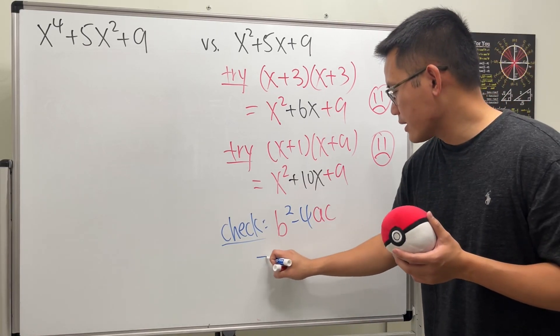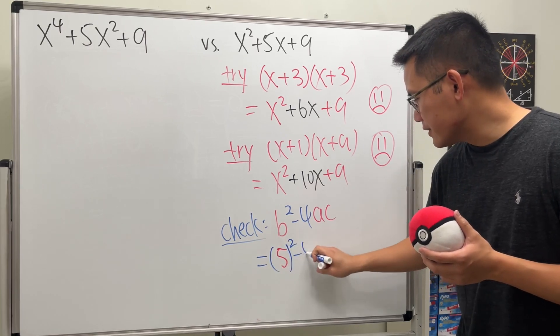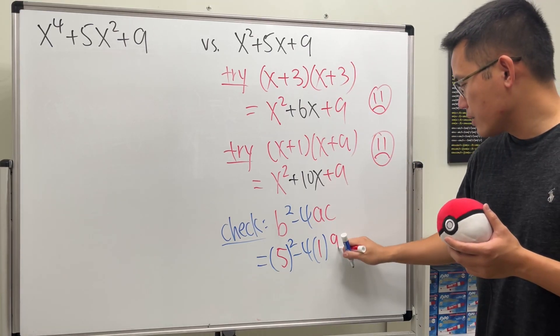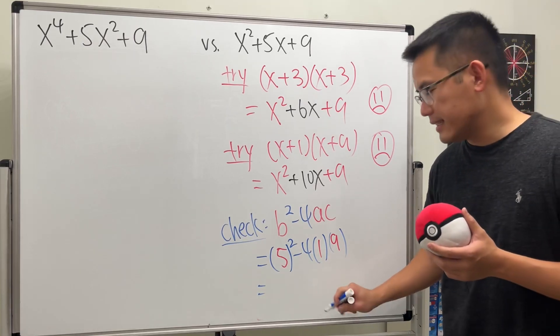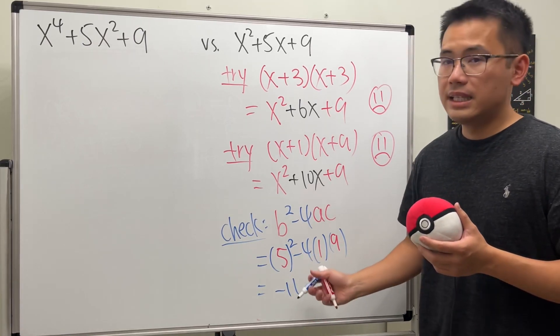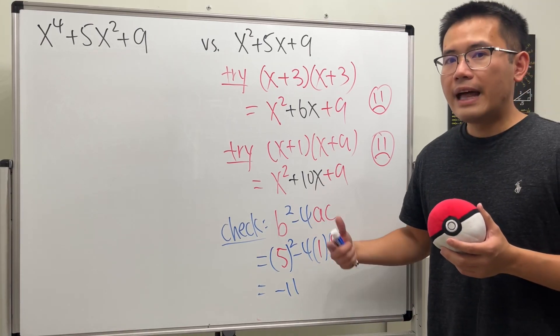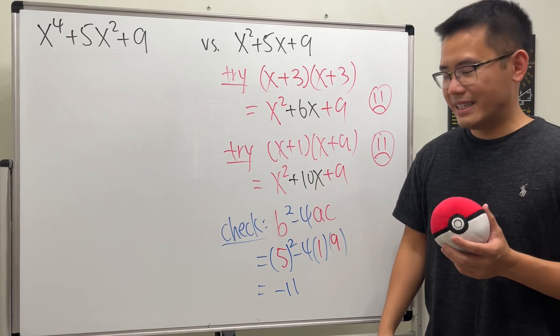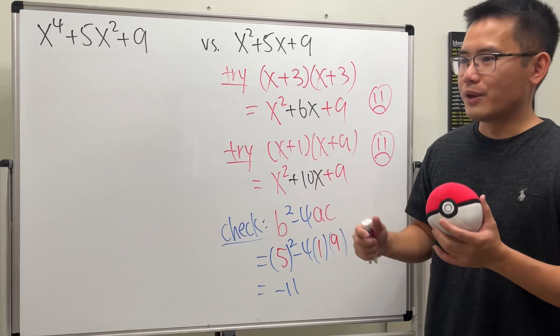This is how we can see if your quadratic expression is factorable or not with real numbers. For this right here, let's just go ahead and compute. The b is 5, so 5 squared minus 4 times a, which is 1, and then the c is 9. And then this right here is 25 minus 36, which is going to be negative 11.